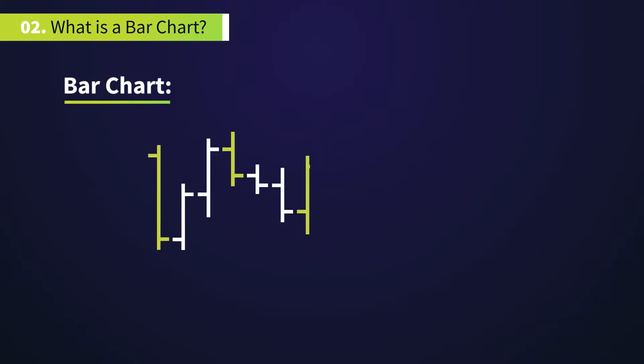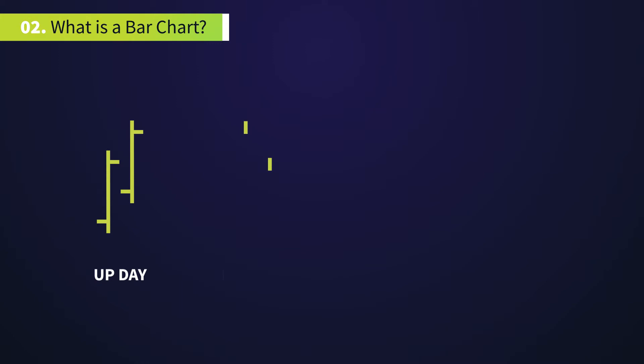Two consecutive bars represent specific relationships that technical traders recognize. These include Up day, which usually means there are more buyers than sellers.